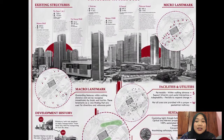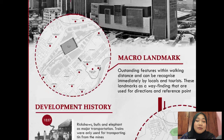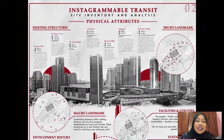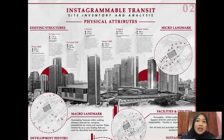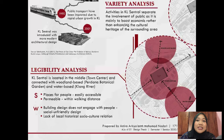First, the existing structures are divided into two which are micro and macro. Existing structures in macro scale have outstanding features and can be recognised immediately by locals and foreigners. This includes Perdana Botanical Garden, National Museum, Menara Gemba Ben Rakyat and Little India Market District. On the other hand, existing structures in micro scale are within KL Central. These are some examples of the existing structures within KL Central. I came up with a legibility analysis with strengths and weaknesses. As for strength, it is a place for people where it is easily accessible, it has visual appropriateness where buildings have similar structure with one another, and it is permeable where it is within walking distance. The weaknesses include building design that doesn't engage with people and lack of local historical social-cultural relation.